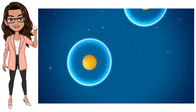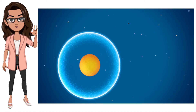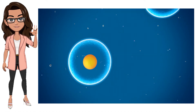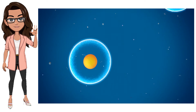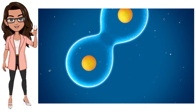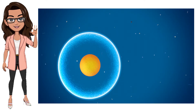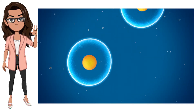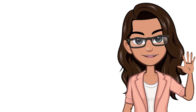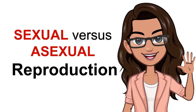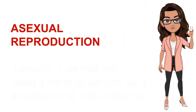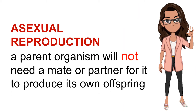Some organisms like cows, sheep, dogs, and cats require two parent organisms — sexual reproduction — in order to reproduce an offspring, while others do not and undergo asexual reproduction. Let's discuss sexual versus asexual reproduction. In asexual reproduction, a parent organism does not need a mate or partner to produce its own offspring.